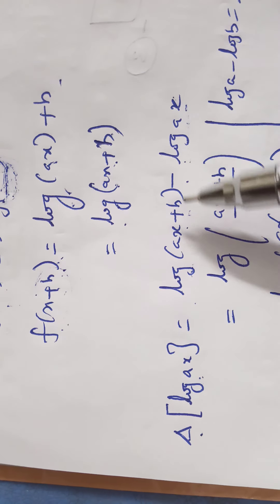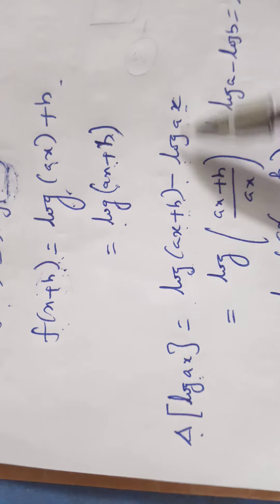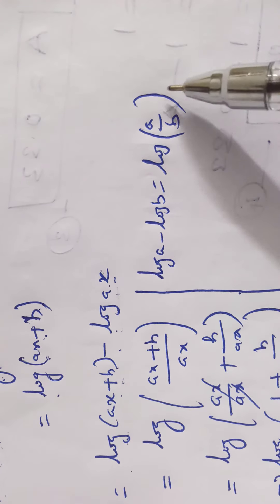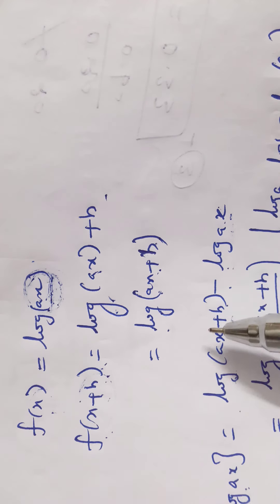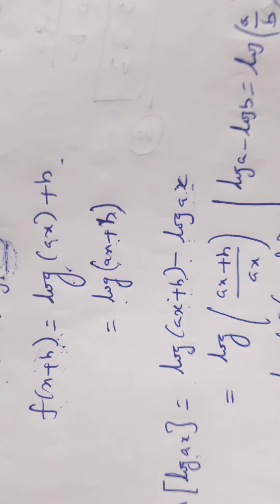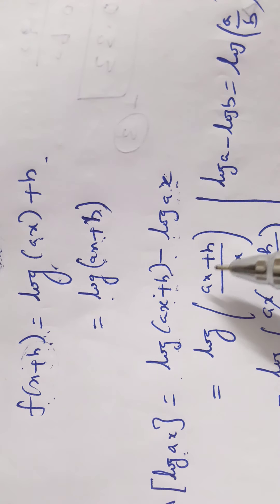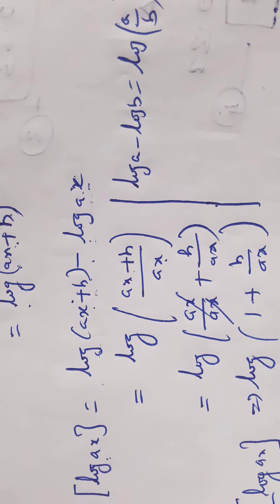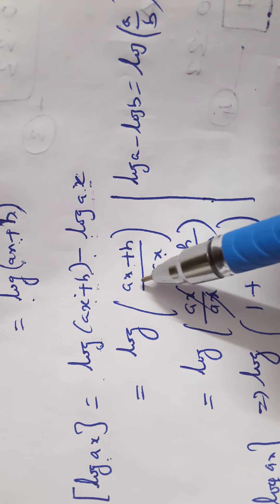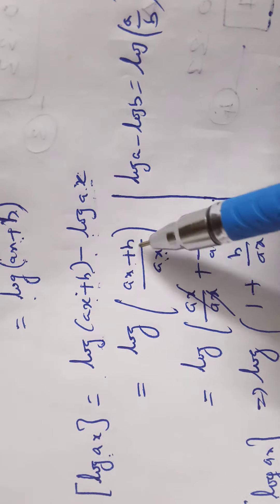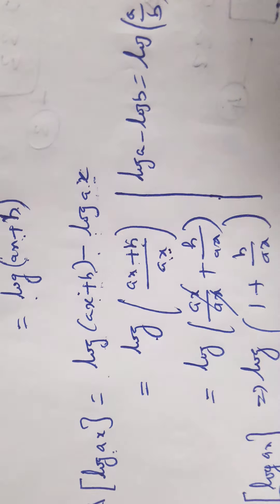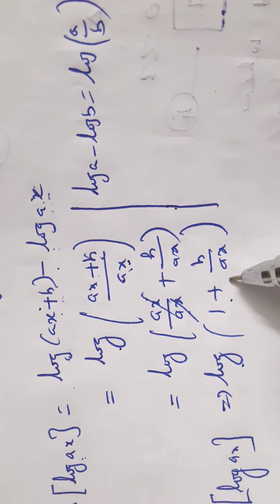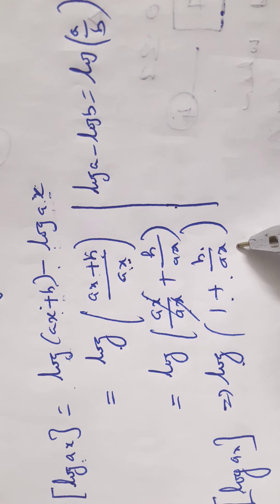We apply the logarithm rule: log A − log B = log(A/B). Here A = ax + h and B = ax. So Δ(log ax) = log((ax + h) / ax) = log(1 + h/ax). This is the final answer.